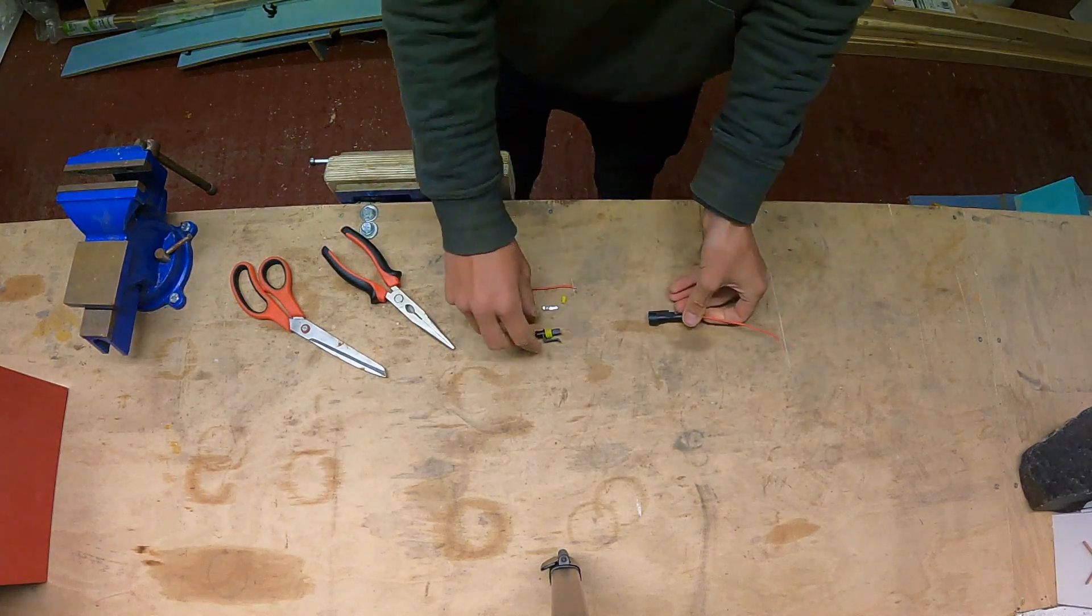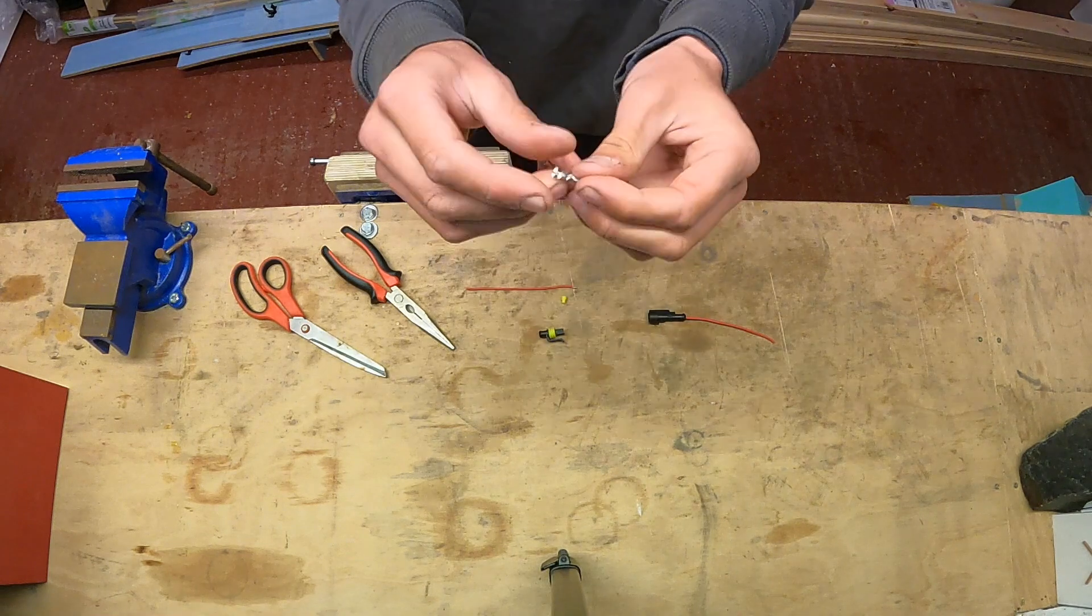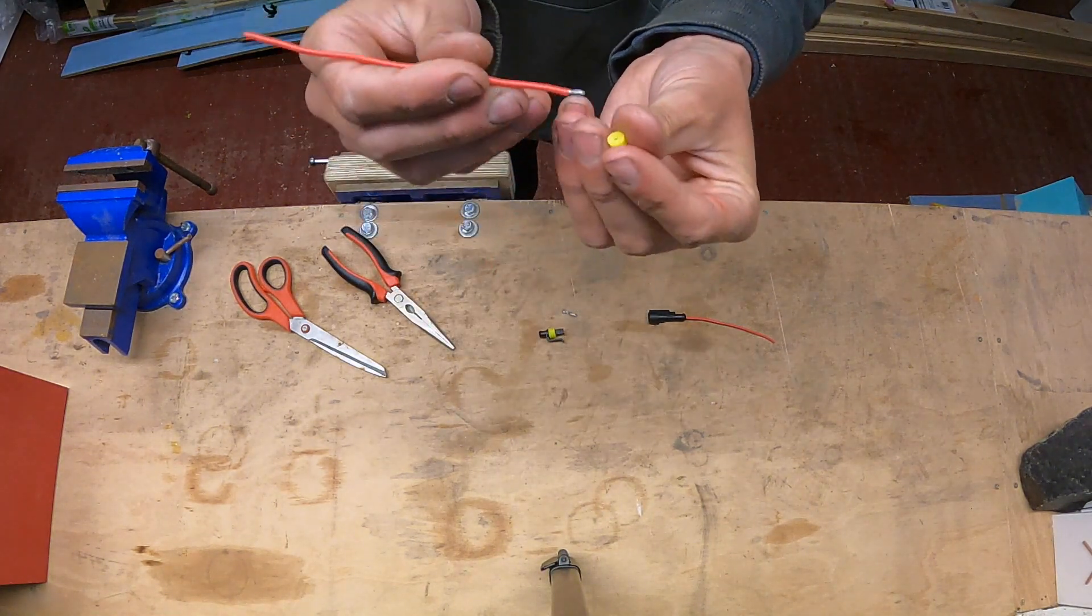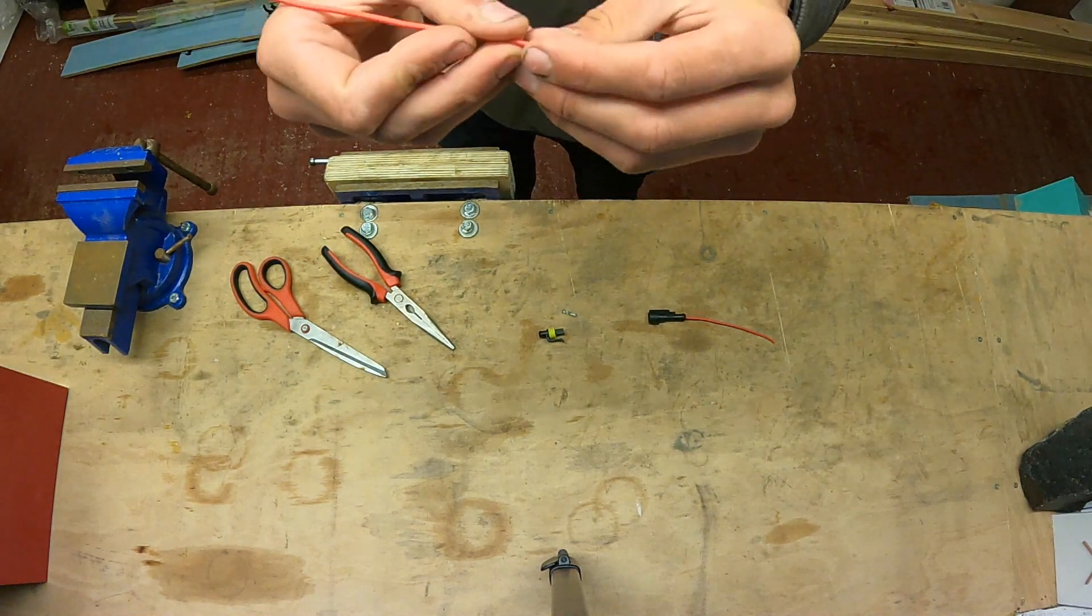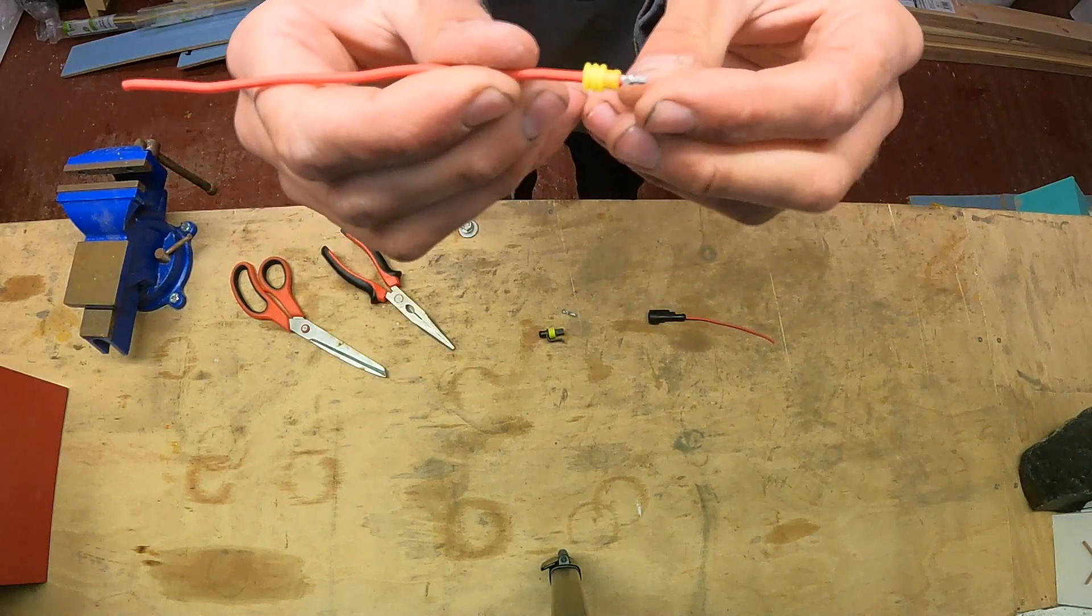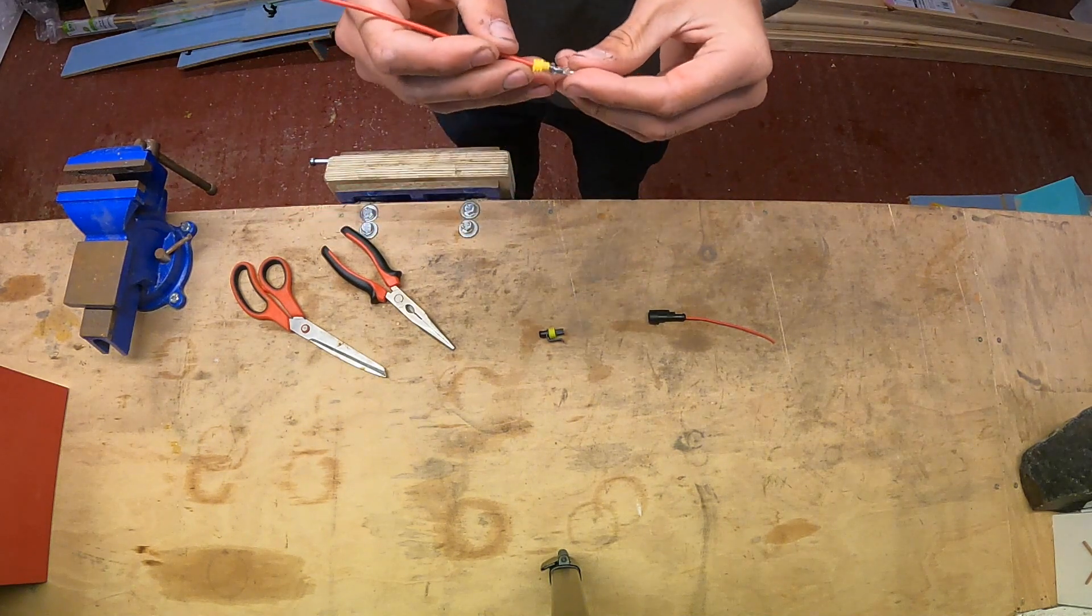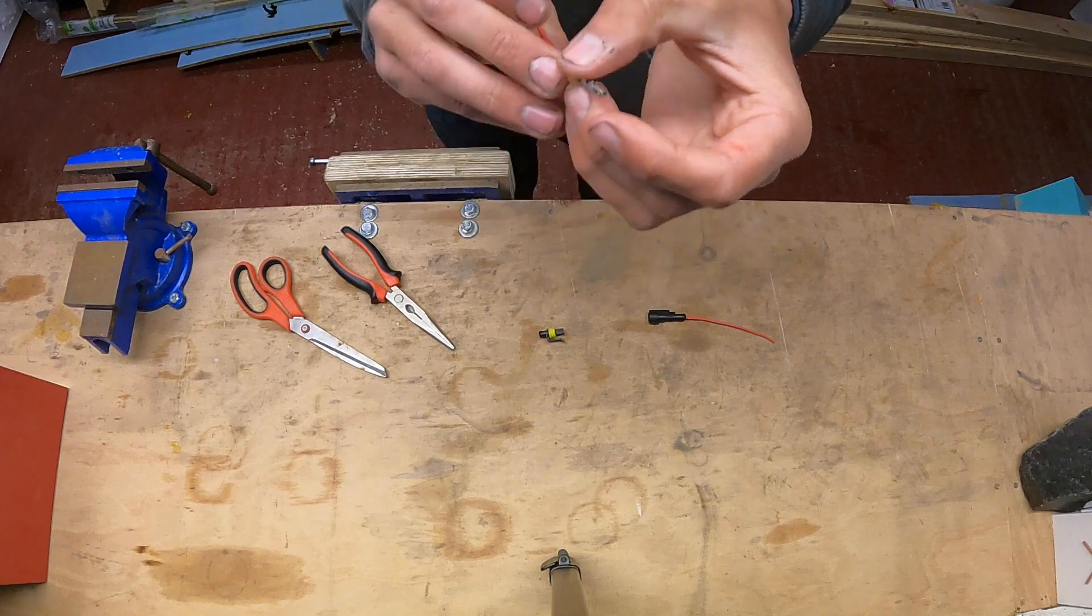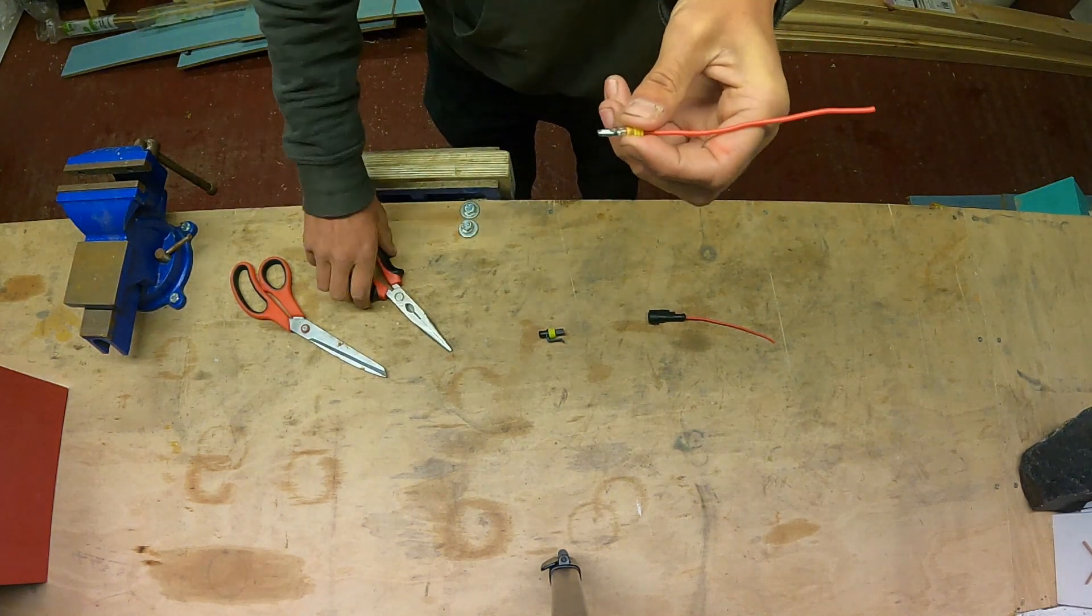Now we can move on to the second side, which is the male connector housing, and inside that is going to be the female terminal. It's exactly the same process. We just pop on the yellow rubber seal around the wire, make sure the wire's stripped back about four to five millimeters, lay that within the female terminal.